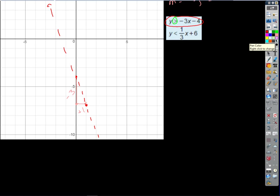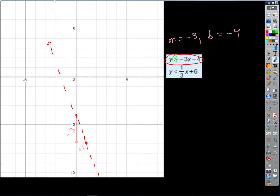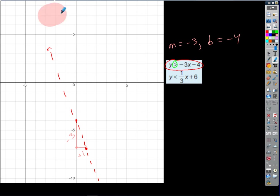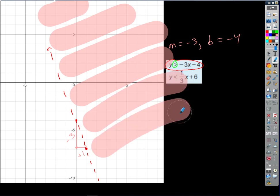How come? Because it doesn't include equals. It's only greater than. It's not greater than or equal to. And so it's going to be a dashed boundary line. In other words, thinking back to what we did earlier in the year, the boundary line is not part of the solution. It's just the boundary that defines the solution. So here's our boundary line.